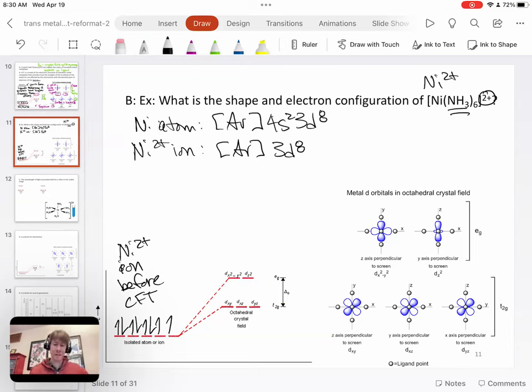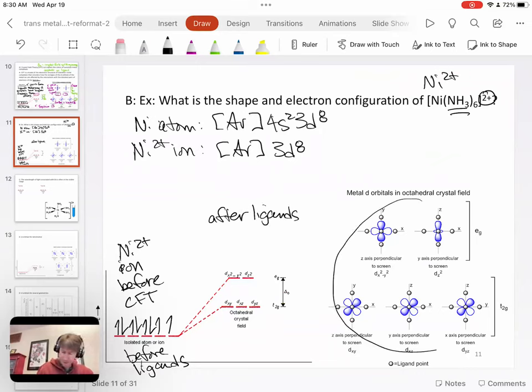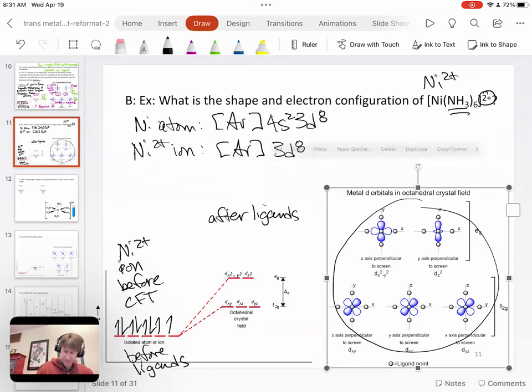Now, how do we do it for this one? Well, this is going to be before CFT or before ligands. And this is going to be after ligands. Because the ligands in these pictures over here, same as the last page, show how they approach the nickel 2 plus 3D orbitals. And what we're going to say for this one is that we're going to put them in. So let's just put them in.